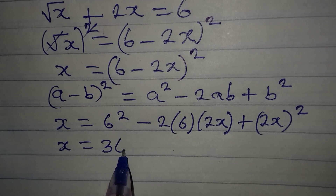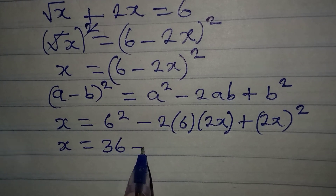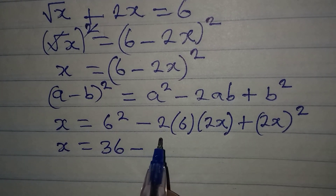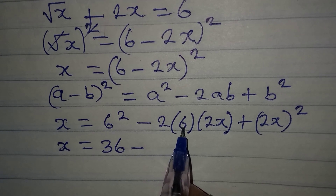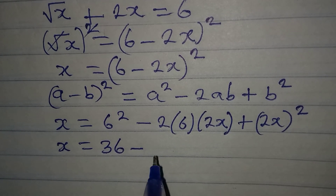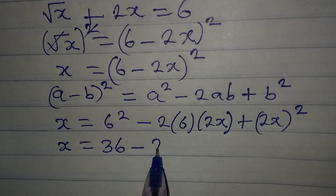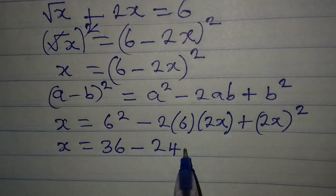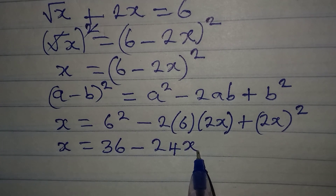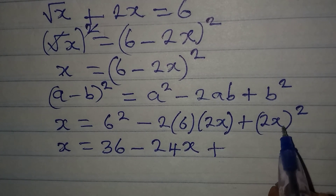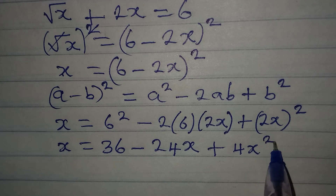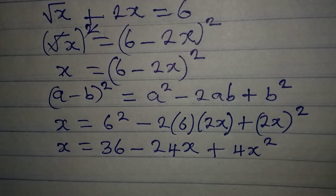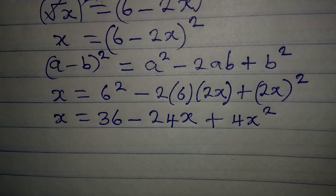So x equals 36, then minus: 2 times 6 is 12, times 2x gives 24x, so minus 24x, then plus (2x) squared gives plus 4x squared.